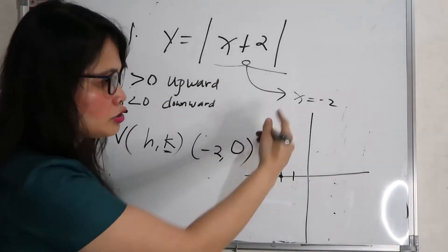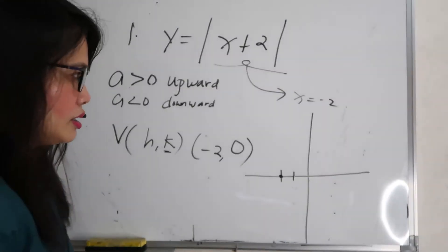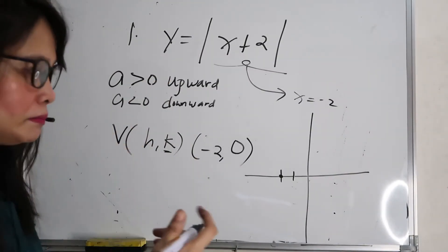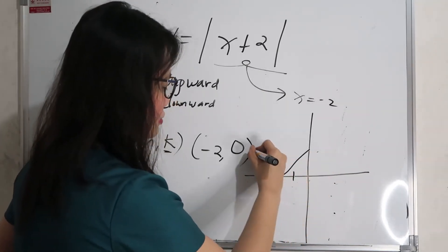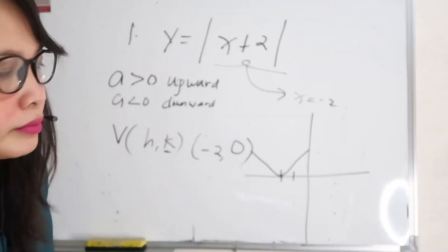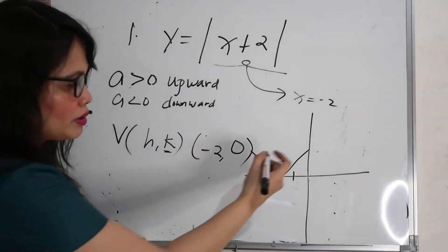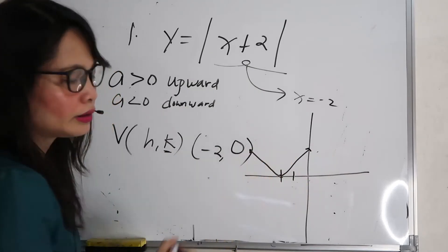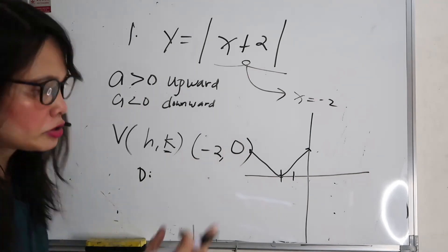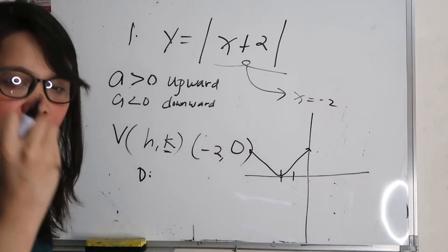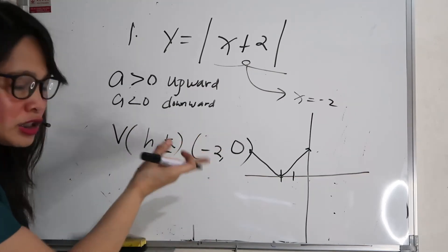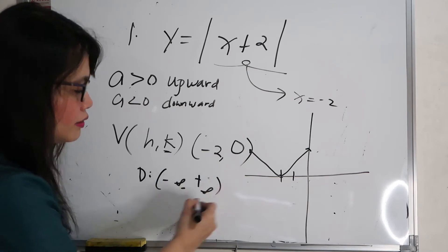Since x equals negative 2 is the axis of symmetry, and the graph of an absolute value function is V-shaped, we can draw the graph. The domain of an absolute value function is always the set of real numbers — from negative infinity to positive infinity.